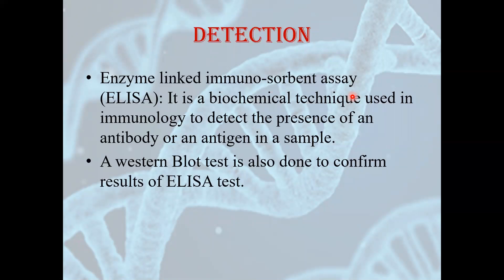How can we detect AIDS? There are two techniques. First is the ELISA technique — Enzyme-Linked Immunosorbent Assay — a biochemical technique used in immunology to detect the presence of an antibody or antigen. They take a sample and study whether antibodies have been formed against the virus; if yes, the virus has affected the person. There is another test called the Western Blot (WB) test, which is also done to confirm the results of ELISA.